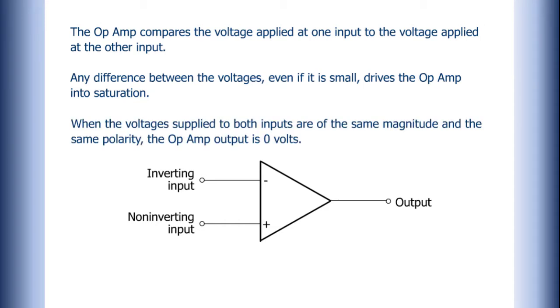When the voltages supplied to both inputs are of the same magnitude and the same polarity, the Op Amp output is 0V.